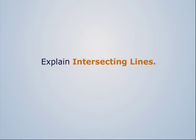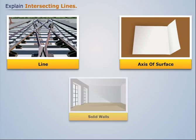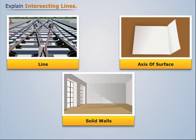Explain intersecting lines. Intersection occurs when either a line or axis of the surface or solid crosses another line or axis or solid.